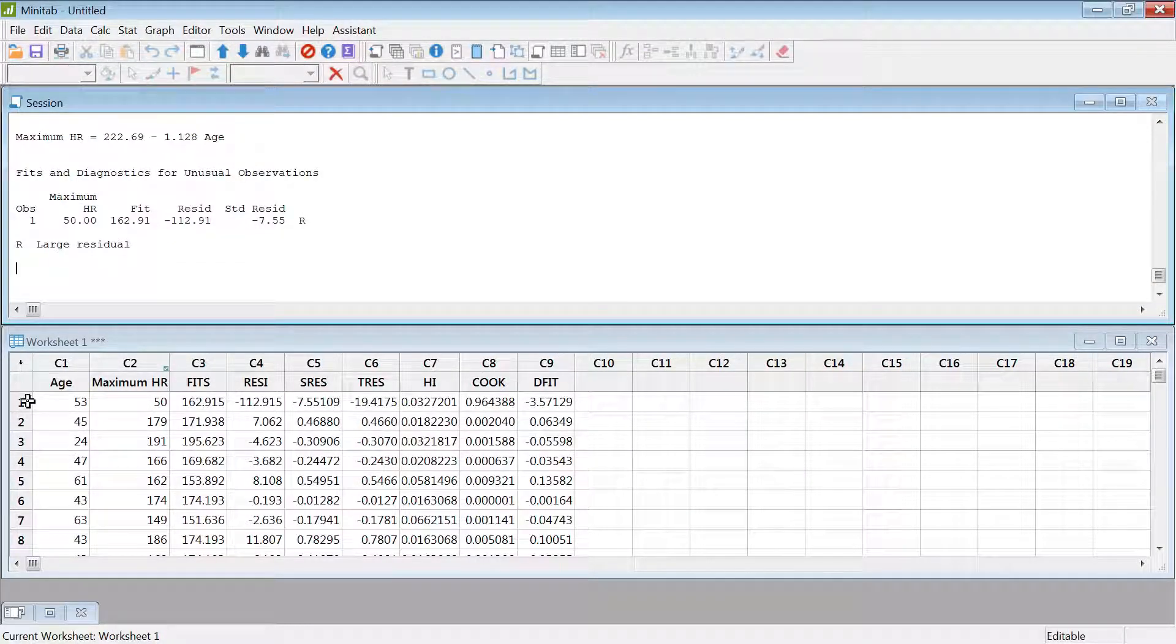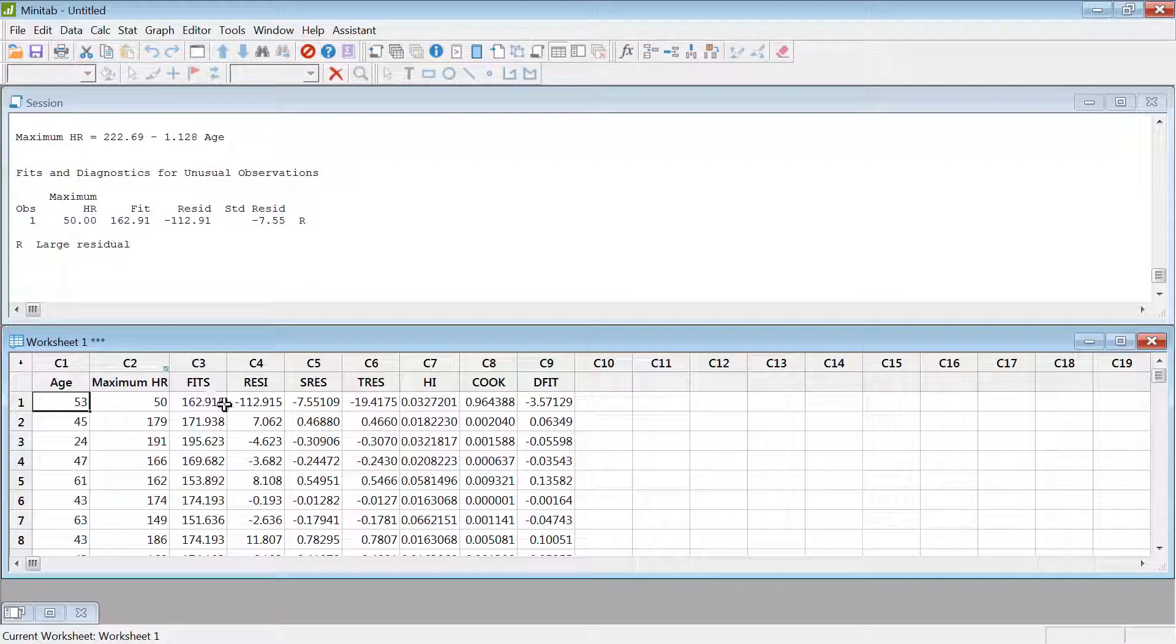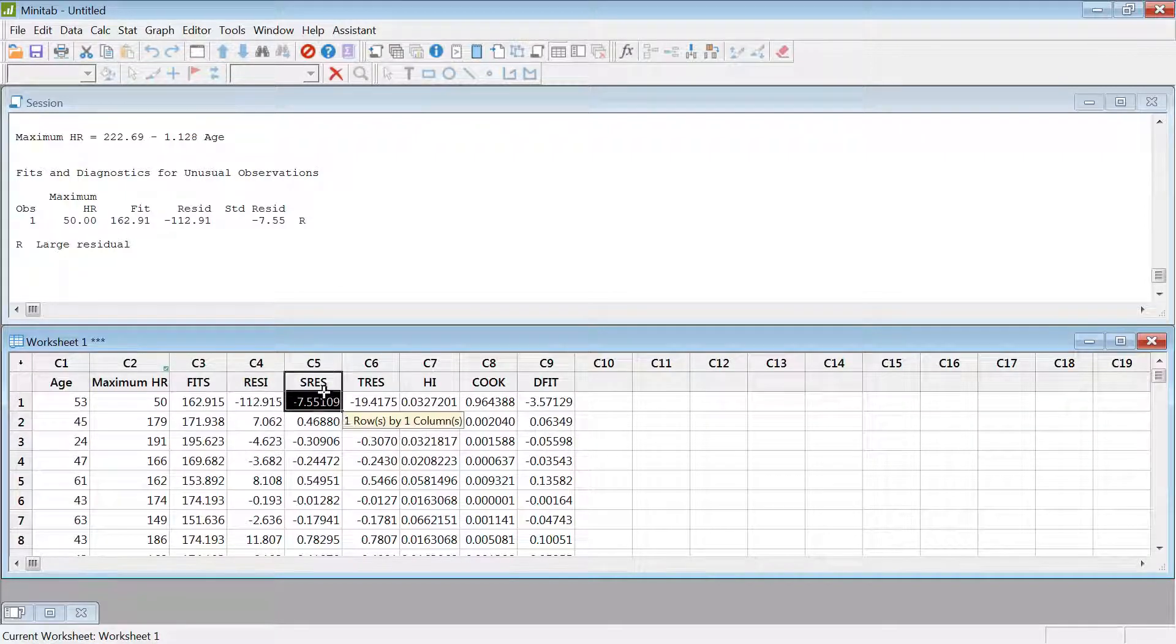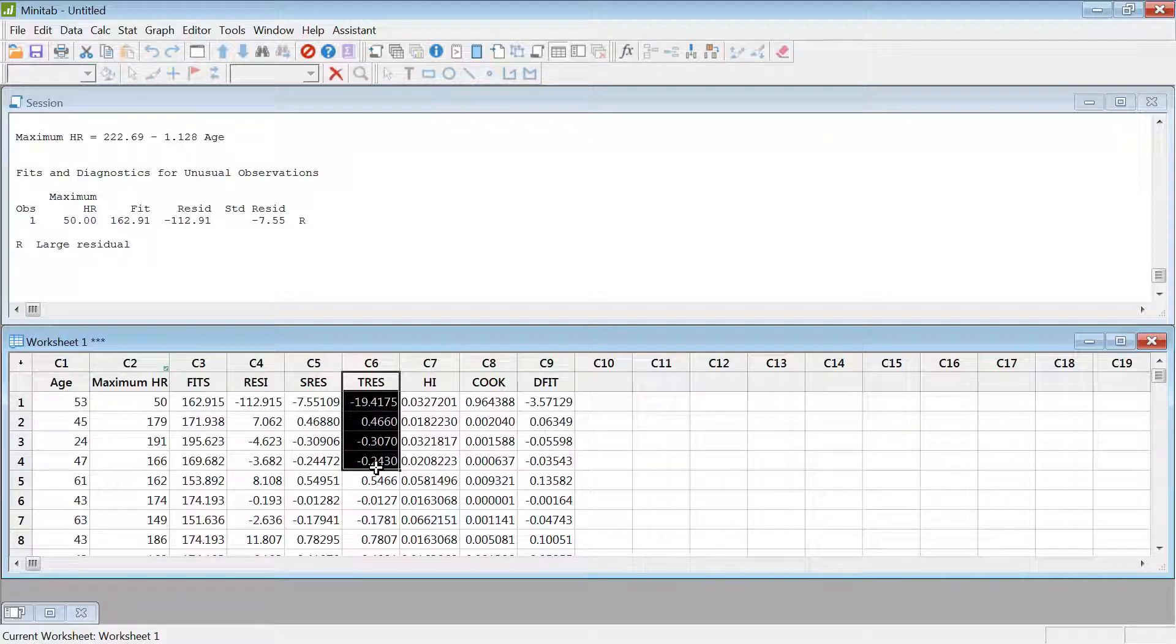Here we got all of these different things. The fitted value for 53 years of age person is 162, but we changed the data to 50 to make it an outlier and also an influential point. Now if you see this one, the RSEI residual, standardized residual, or whatever you'd like to call that, and this is the SRES, that's the standardized studentized residual, which more than two is considered really bad. It's an outlier and also an influential point.